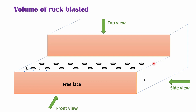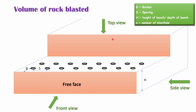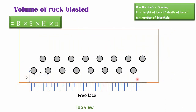Let's calculate the volume of the rock blasted. The parameters given are: burden B, spacing S, height of the bench H, and the number of blast holes — here there are 8 in the second row and 8 in the first row, totaling 16 blast holes. So the volume of rock blasted equals burden multiplied by spacing, multiplied by depth, multiplied by the number of blast holes.